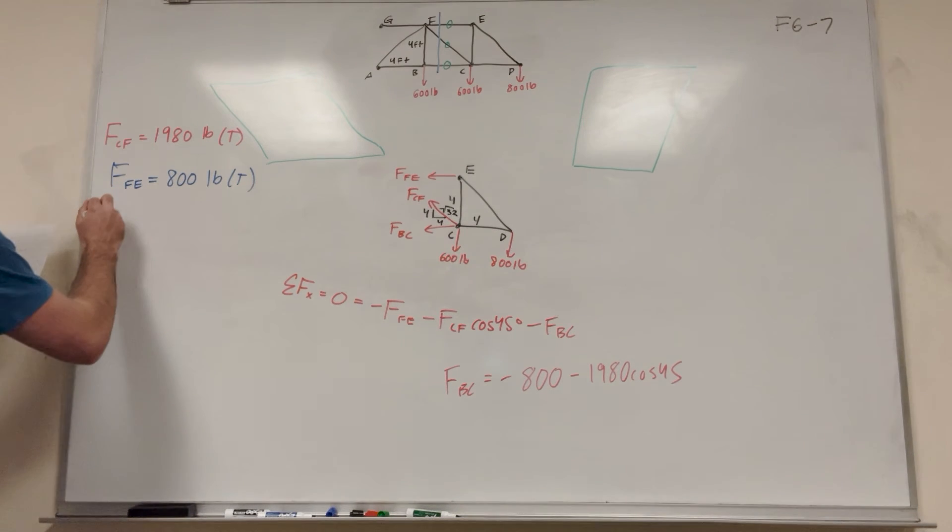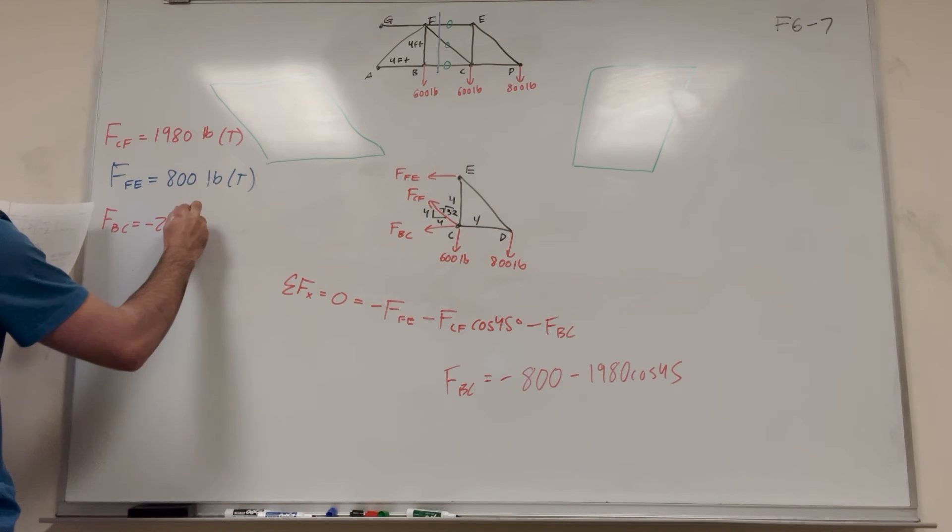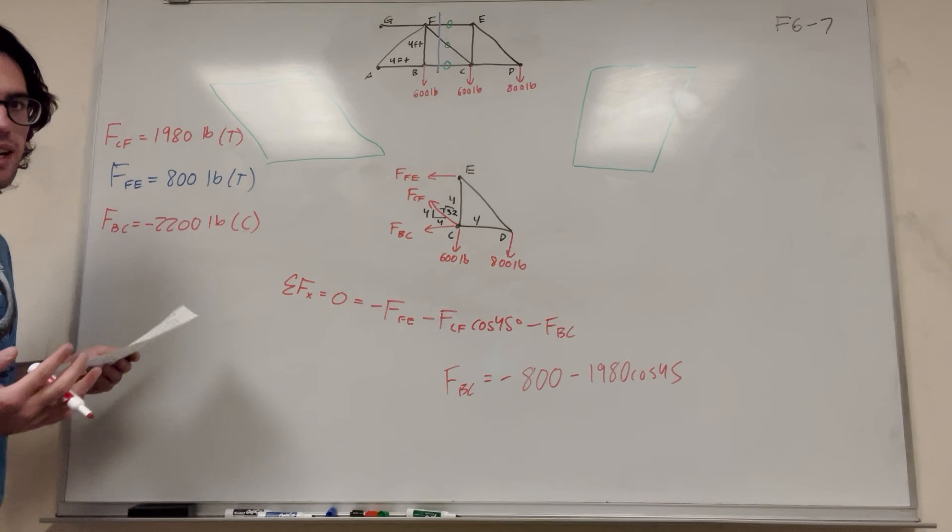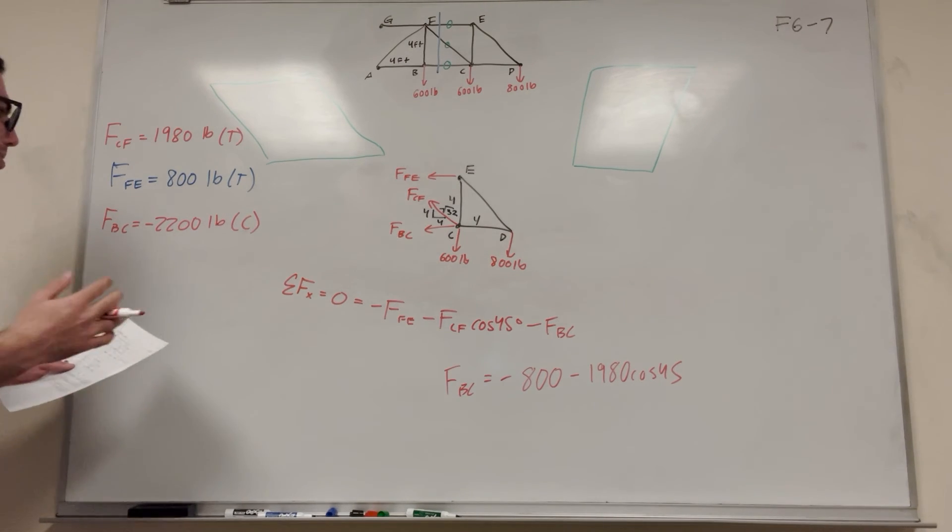you get FBC is equal to negative 2200 pounds. And because we found it's a negative number, like I said, it's going to be compression. Negative number means compression.